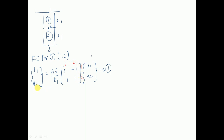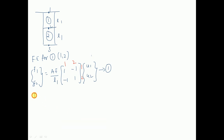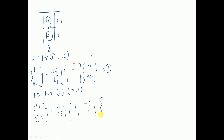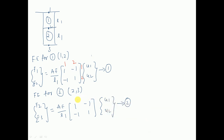Similarly, the finite element equation for element number two: element number two is connected with nodes 2 and 3, so {f2, f3} = (AE/l1) × [1, -1; -1, 1] × {u2, u3}. We give the notations for element number two with rows and columns labeled 2, 3 and 2, 3.